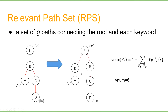We define Relevant Path Sets (RPS). Given a rooted tree and root R, an RPS is a set of G paths in the rooted tree connecting the root and each keyword. This is the rooted tree with root F. The RPS consists of paths F to keyword K1, F to keyword K2 via B, and F to keyword K3 via F. All the paths are originated from the rooted tree. We define v-norm as the number of vertices in the RPS. The original rooted tree has five vertices, while the RPS v-norm is six. The v-norm is actually the critical definition in our paper.